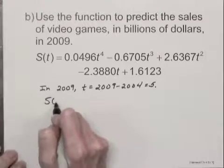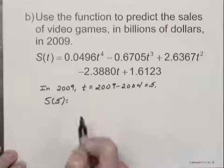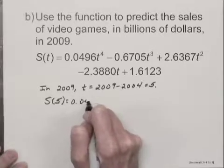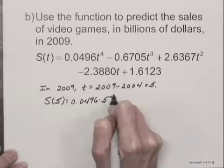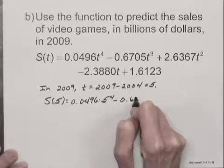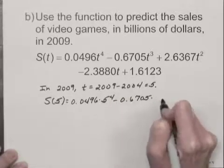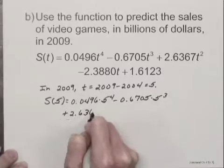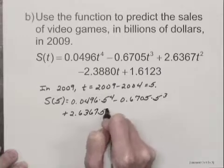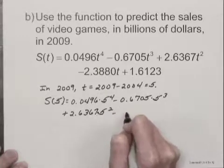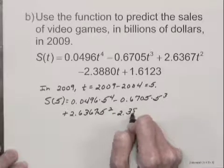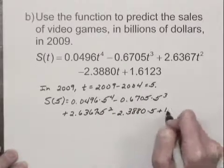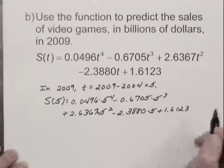So we want to find S of 5, and we'll do that just by substituting 5 for t in the function. It's going to be a lot of writing. Here we have 5 cubed plus 2.6367 times 5 squared minus 2.3880 times 5. And finally, we add 1.6123.